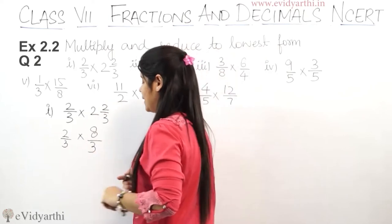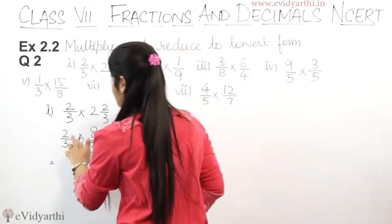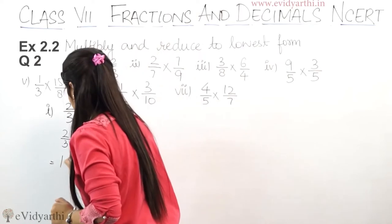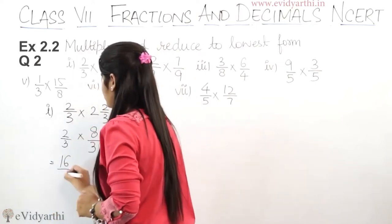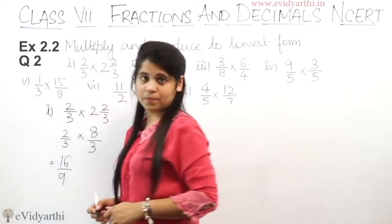So multiply it. This will be 2 into 8 is 16, 3 into 3 is 9. Check it.